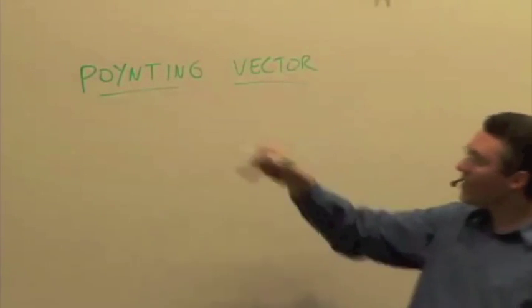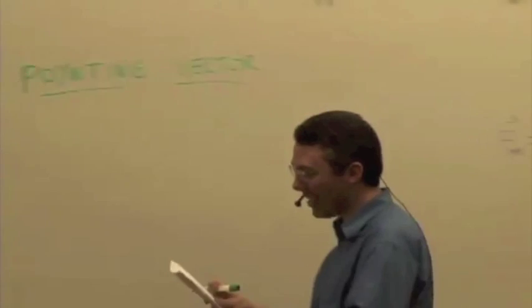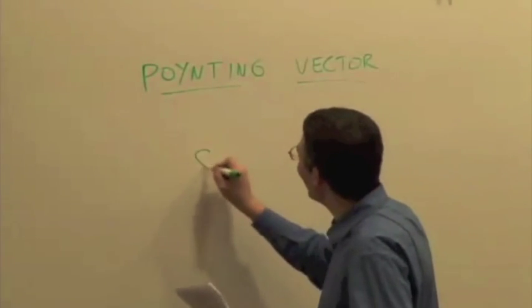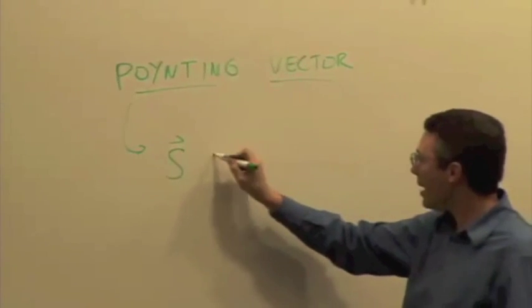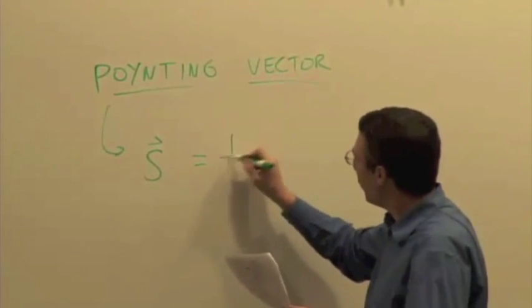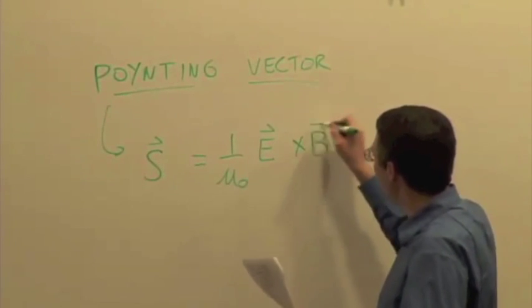Which is a great name because vectors point, of course, but it's actually someone named Poynting actually came up with this thing, so I thought that was just fantastic here. We have this Poynting vector, which is given the symbol S. It's equal to 1 over mu naught E cross B.